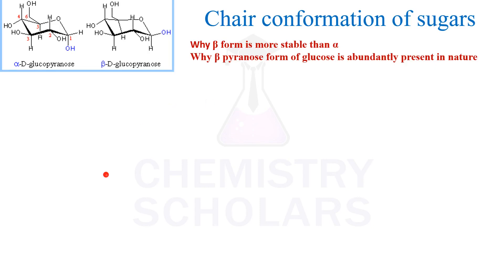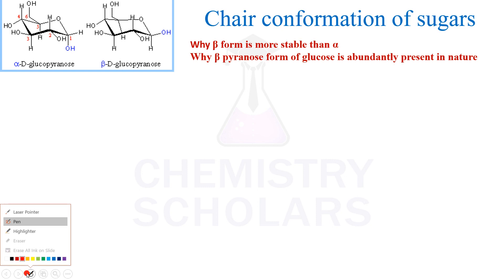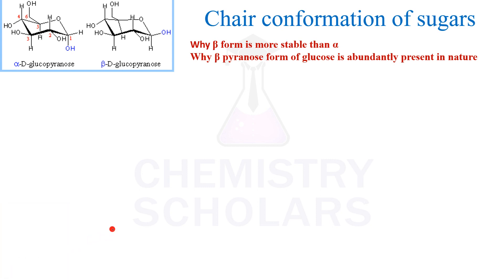Most of the time this question is asked: why is the beta form more stable than the alpha form, or why the beta pyranose of glucose is abundantly present in nature?